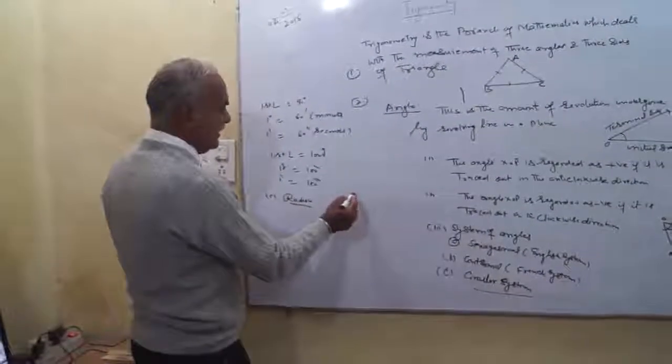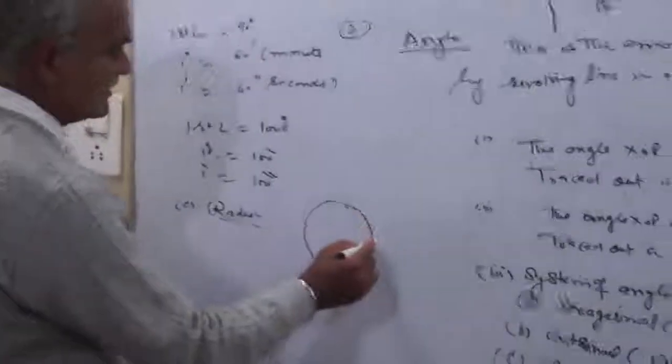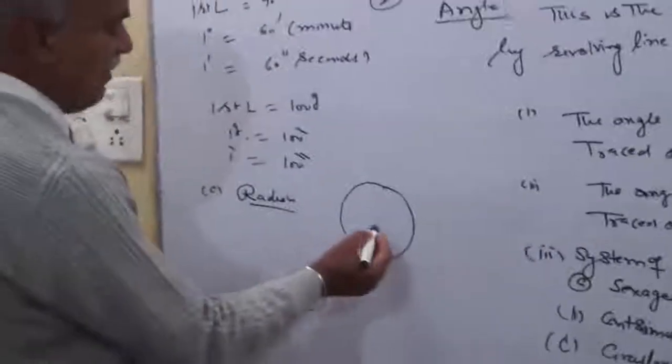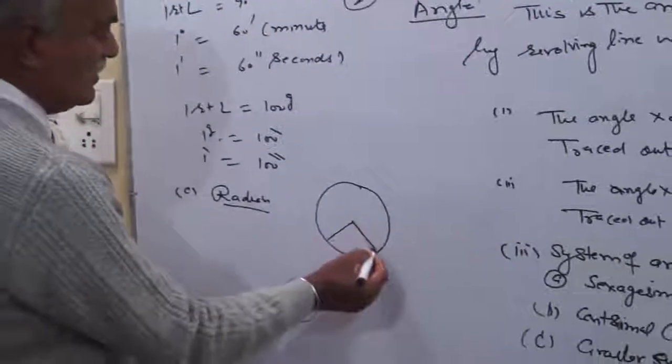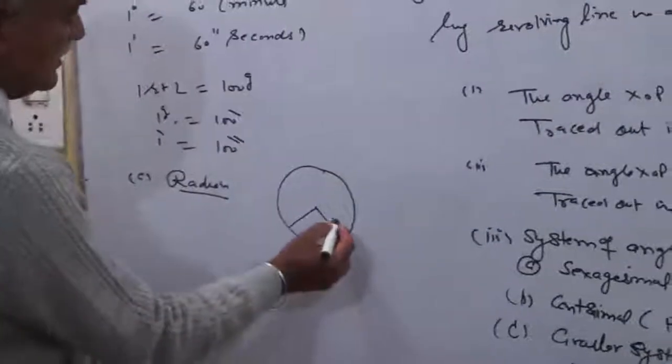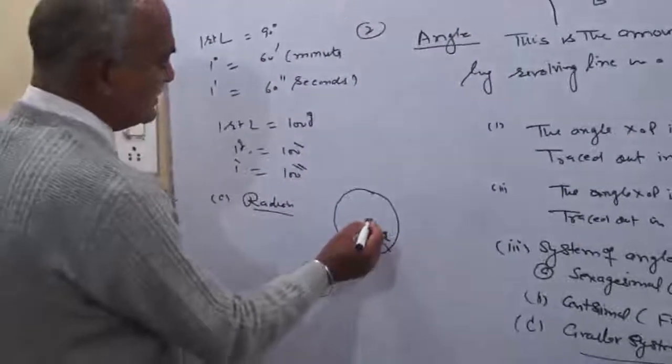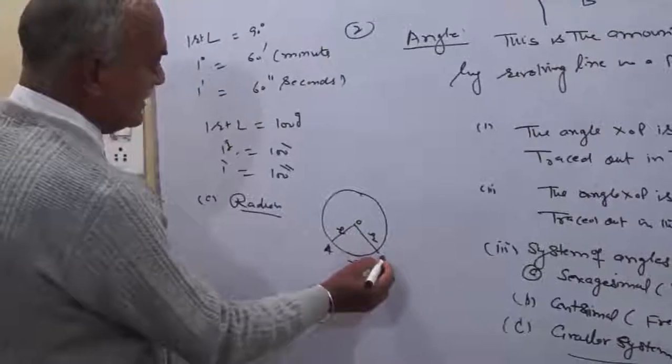What is radian? A radian is the angle subtended at the center of a circle by an arc whose length is equal to the radius of the circle. This is the radius, and AB is your arc.